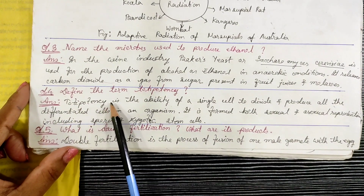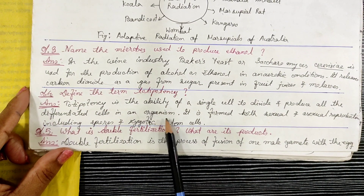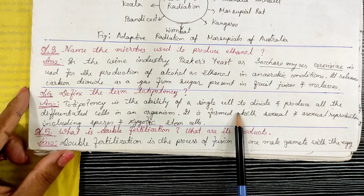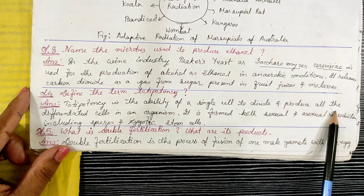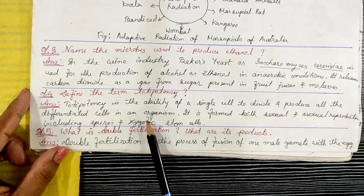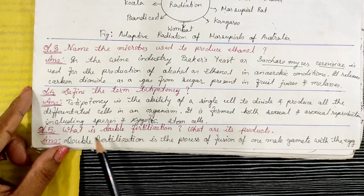Next, define the term totipotency. Totipotency means it is the ability of a single cell to divide and produce differentiated cells in an organism.